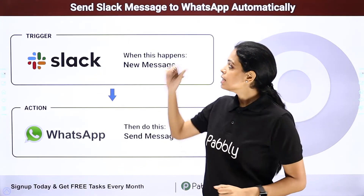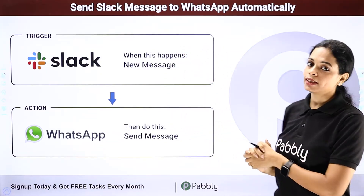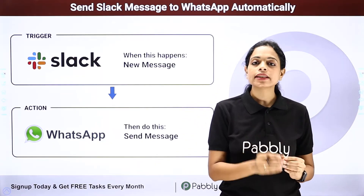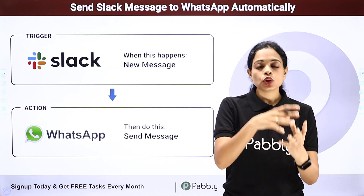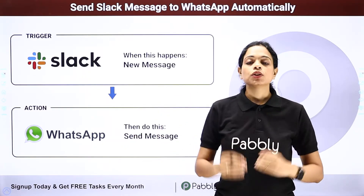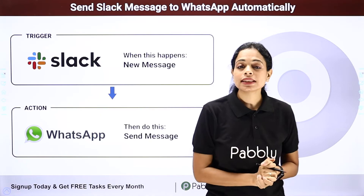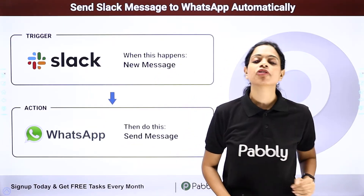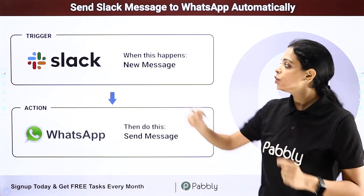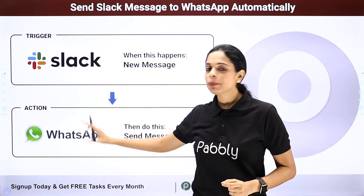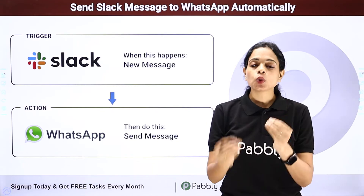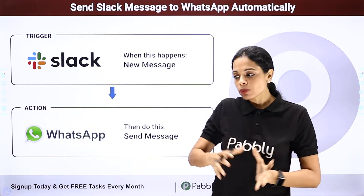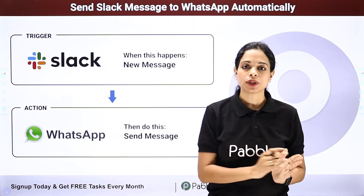Next, we have sending Slack messages to WhatsApp automatically. I have received messages on Slack and I want that from particular channels, those messages should be shared on WhatsApp also — to my further team. How can that be done? You have to integrate these two applications with the help of Pabbly Connect. Your trigger application would be Slack and your action application would be WhatsApp. Every time you have a message and you know these particular messages are supposed to be shared with the rest of the team, you can simply forward them.